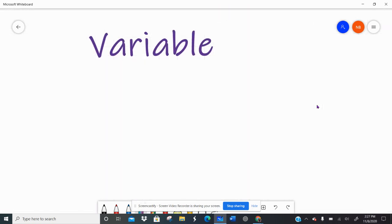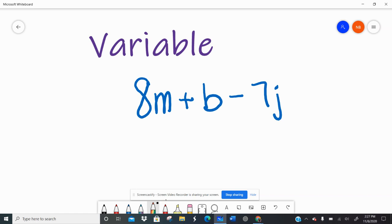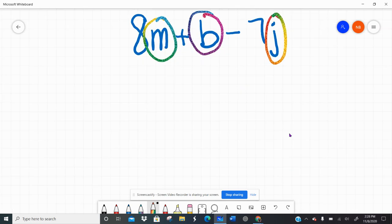And then again, variable. I kind of talked about variable when it comes to the coefficient, but the variable is the letter, sorry, next to the coefficient, right? So if I have 8m plus b minus 7j, right? My variables here, let me get a new color. So m is the variable. B is the variable. J is the variable. So a variable is a letter or symbol that stands for an unknown number, right? That represents some number. I just don't know what it is quite yet. So variable is the letter.